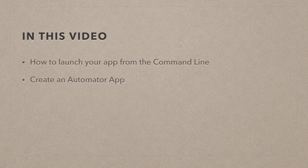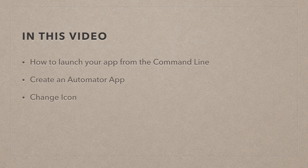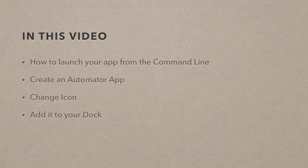Once we've done that, the Automator app will have the auto logo, but you may want to replace that with the icon of the app you're actually launching — I'll show you how to do that as well. Finally, we're going to add it to our dock so that it looks just like a normal app and we can launch it with the parameters.